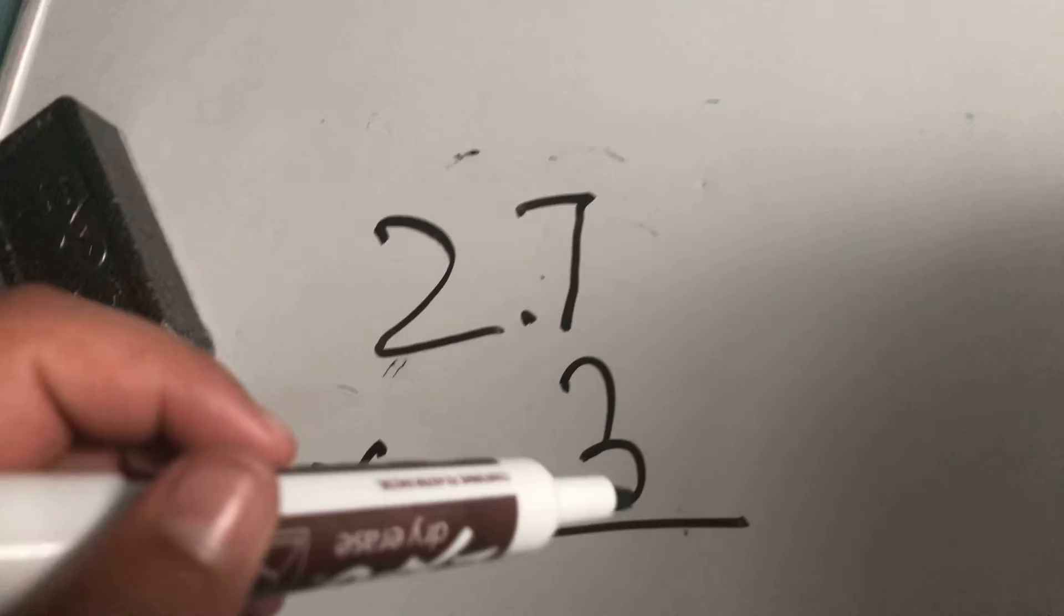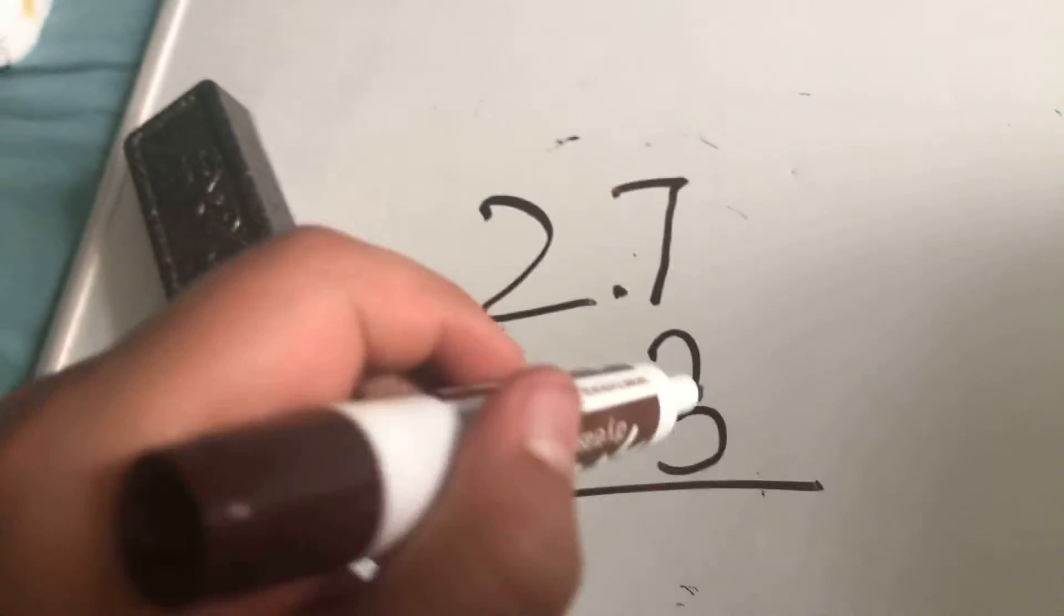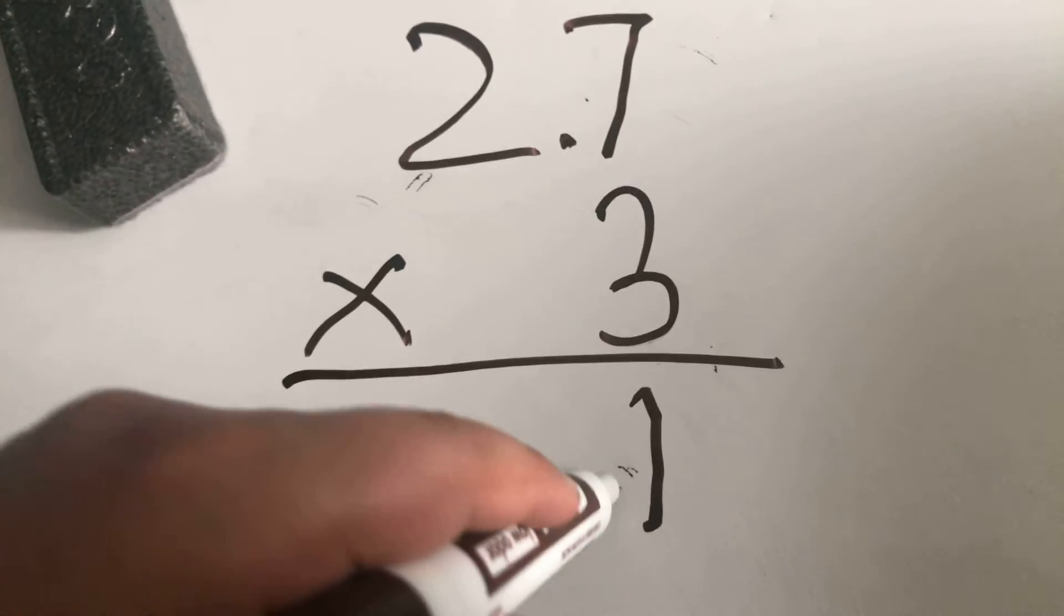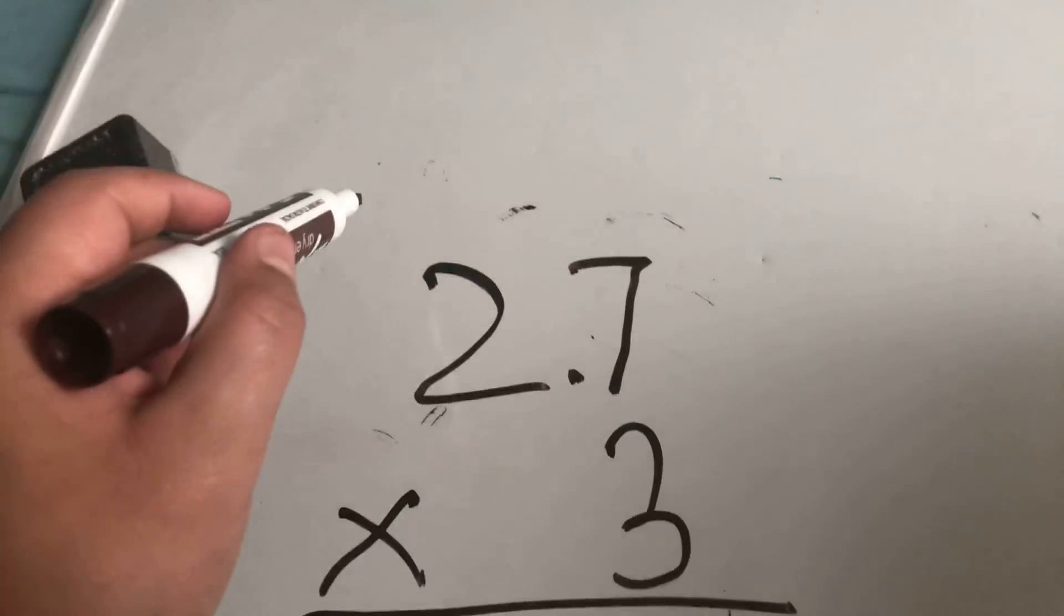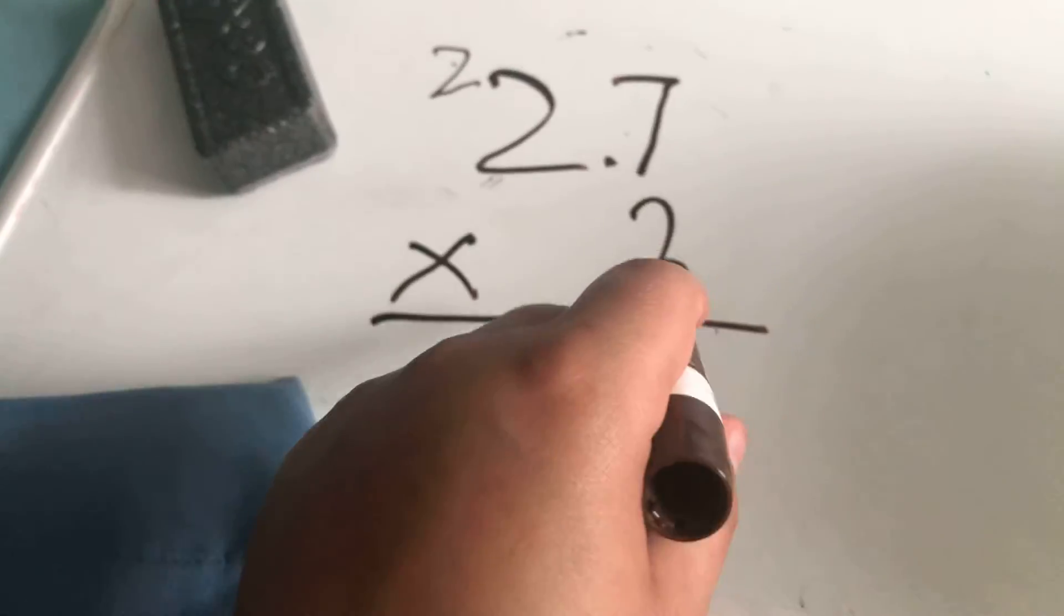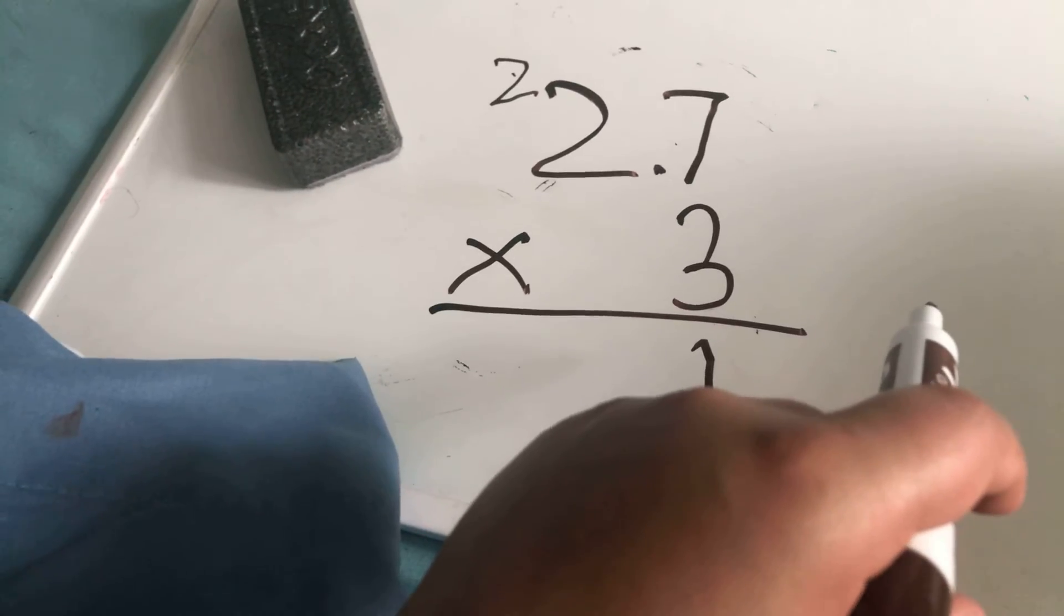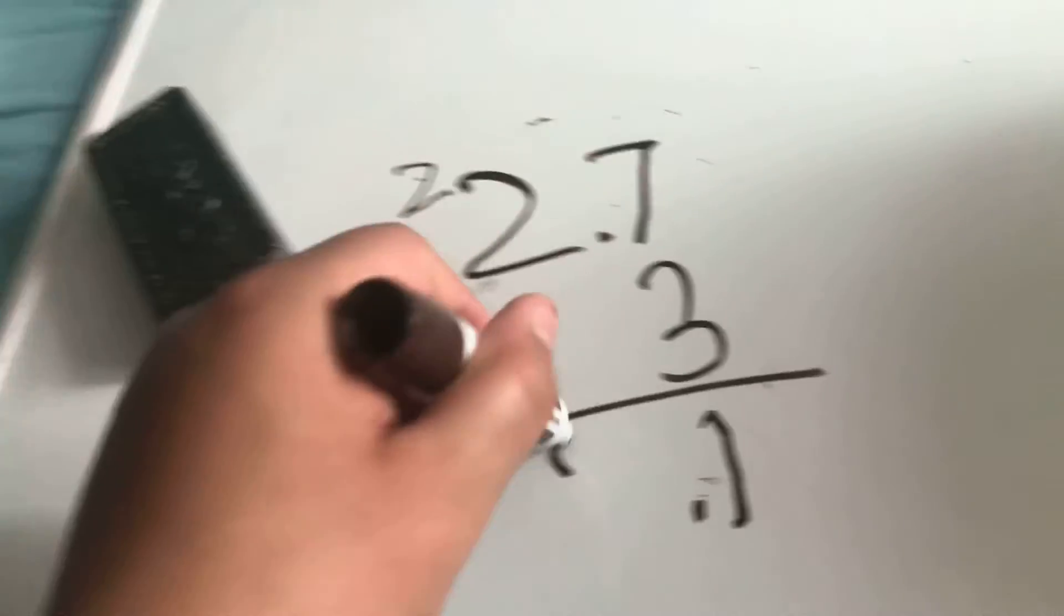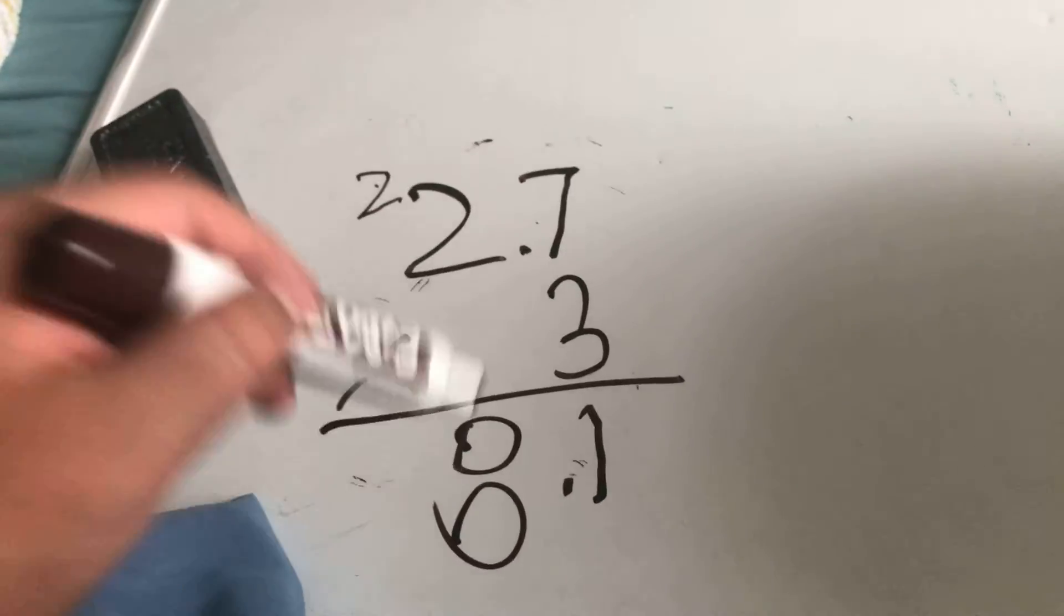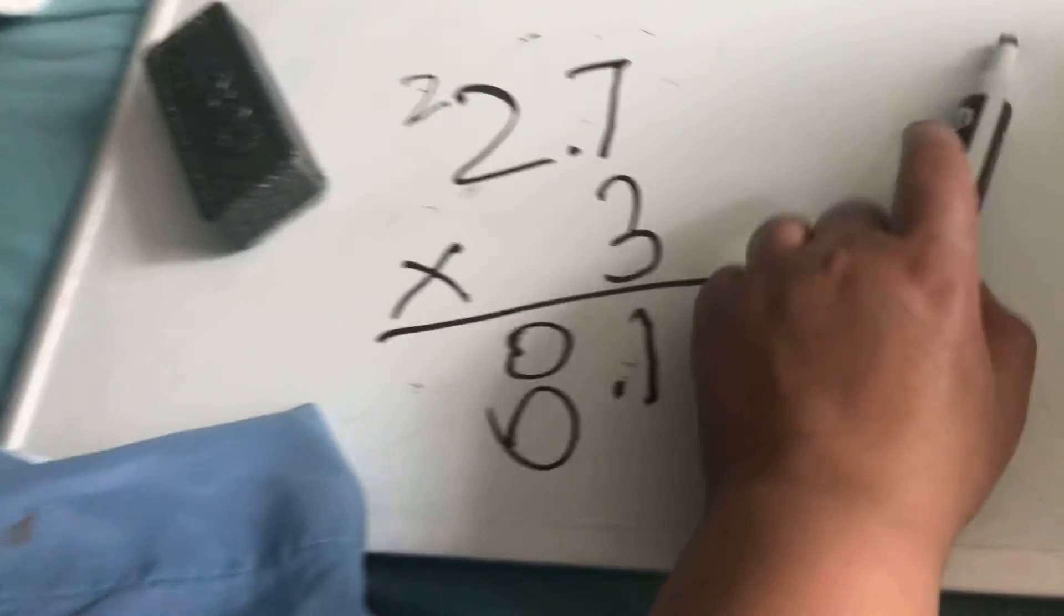So, 2.7 times three. Three times seven is 21, so we put the one, we put the point here. We'll carry the two. Three times two is six, plus two is eight. So 2.7 times three is 8.1. This is how we do it.